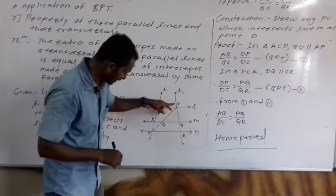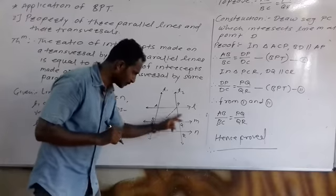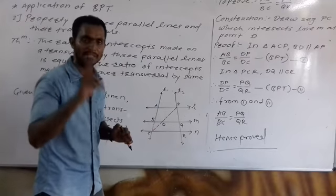Similarly, in triangle PCR, DQ parallel to CR. Therefore, DP upon DC equals PQ upon CR. Again, by BPT theorem, equation number 2.